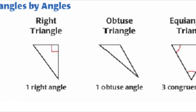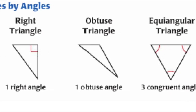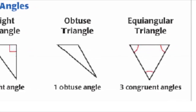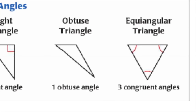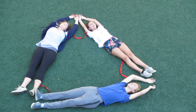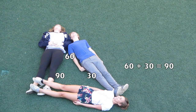Triangles can be classified by angles and by sides. By angles, a triangle can be acute, obtuse, equiangular, and right. In an acute triangle, all angles are less than 90 degrees. In an obtuse triangle, one angle is greater than 90 degrees. In an equiangular triangle, all angles are 60 degrees. In a right triangle, one angle is 90 degrees, and the two acute angles are complementary.